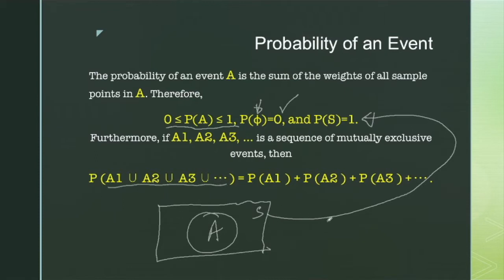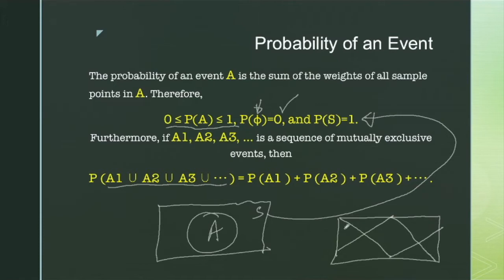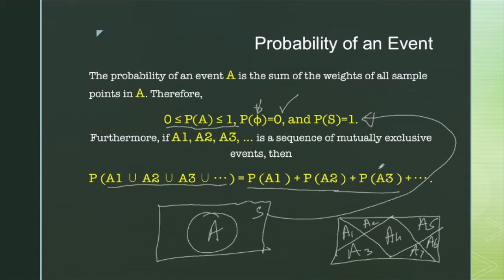If we define a sample space in a Venn diagram with many events — A1, A2, A3, A4, A5, A6, A7 — then if there are seven events in a sample space, the probability of the summation of all seven events must be equal to one.